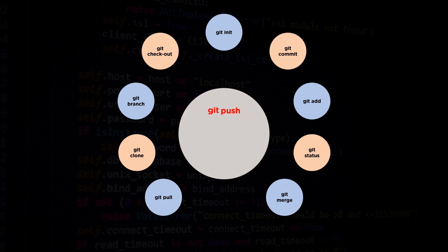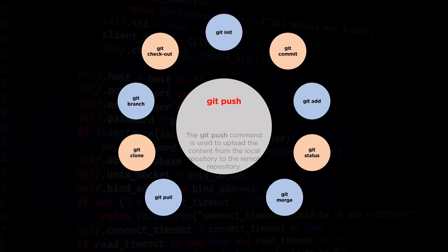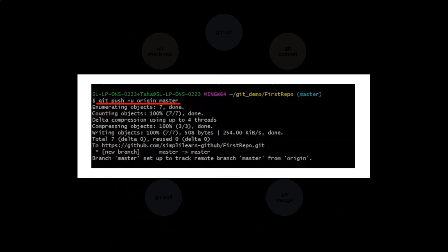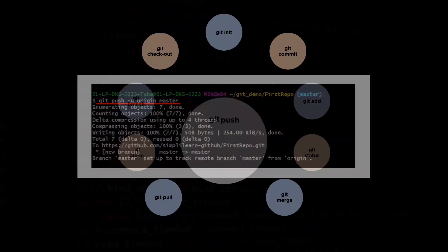The next command we shall look at is the git push command. The git push command is used to push the local repository content to a remote repository. After the local repository has been modified, a push command is used to share the modifications with remote team members. When we use git push -u origin master, the objects are being pushed from the local repository to a remote repository.